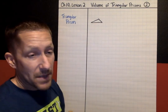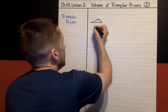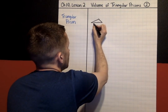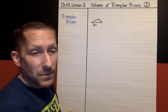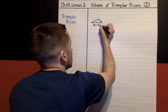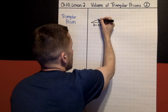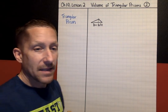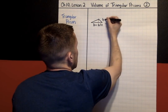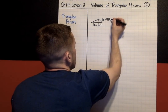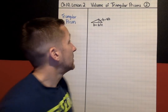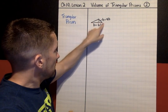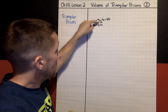On the base of the triangular prism, this line — the base of the triangle itself — is going to be six feet. And there's also a height of this triangle: the height of the triangular base is four feet. So the base of the triangle that makes the base of the prism is six feet, and the height right here is four feet.